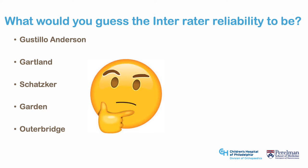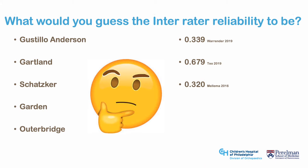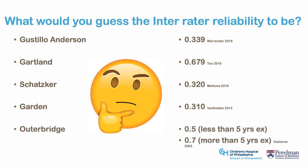Well-known classification systems have somewhat lamentable reliability, but could be improved by giving raters set criteria. Castillo and Anderson for open fractures has an inter-rater reliability of 0.339 in one study. Gartland for pediatric supracondylar humerus fractures was 0.679. Schatzker for tibial plateau fractures has a reliability as low as 0.320. Garton for femoral neck fractures as low as 0.310. Outerbridge has been shown to be 0.5 in raters with less than 5 years experience and 0.7 in those with more than 5 years, arguing for more experienced raters to minimize bias.